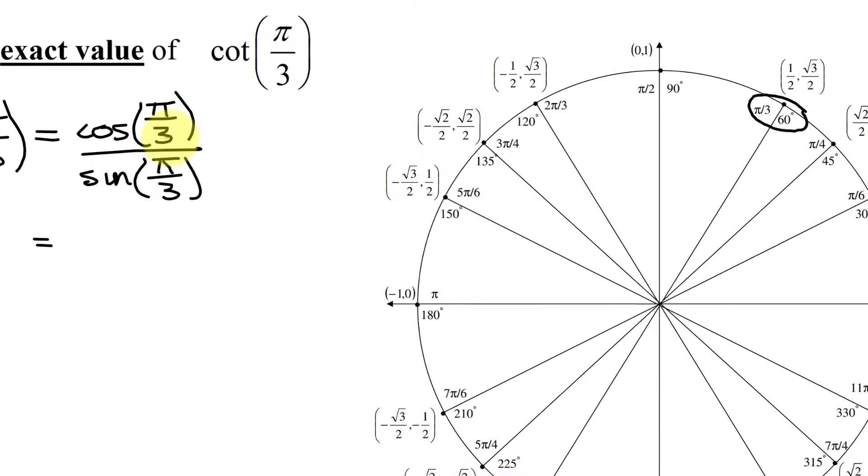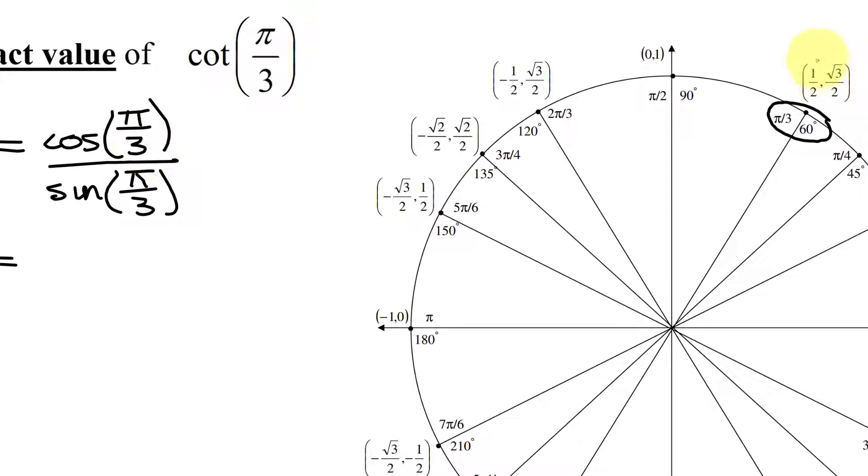And what is the cosine of pi over 3? It's the x-coordinate at this point, so it is 1 half, divided by the sine of pi over 3, the y-coordinate at this point, so it's the square root of 3, divided by 2.